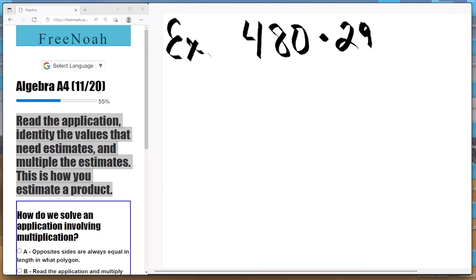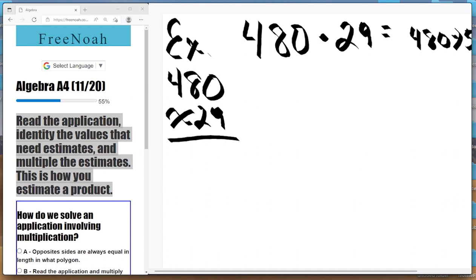480 times 29. Let's rewrite this. I run out of real estate here, but I'm going to go ahead and kind of dictate what I write. So 480, well that's going to round up to 500, and 29 is also going to round up to 30.